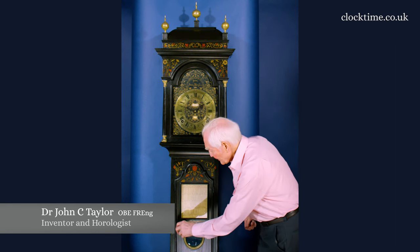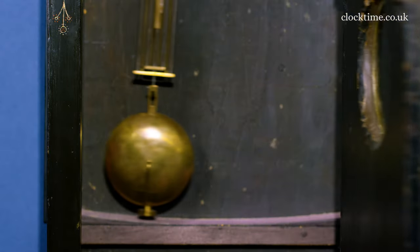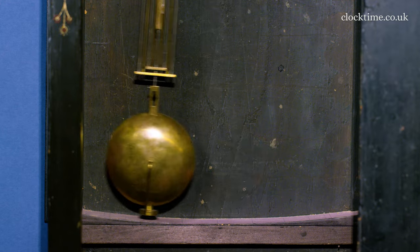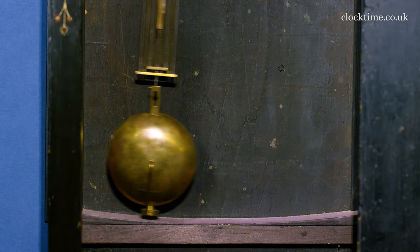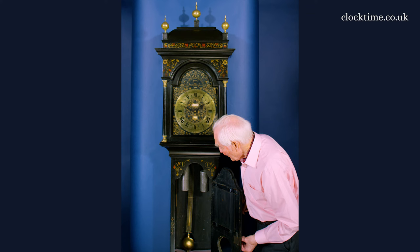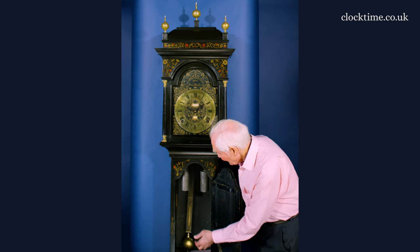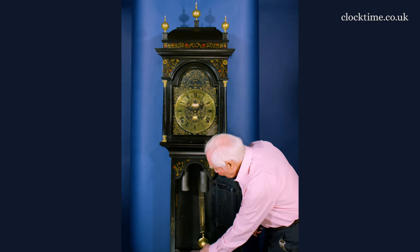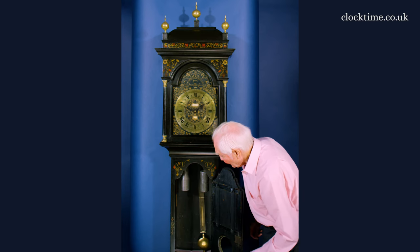I'll open the trunk and show you the temperature compensated pendulum. It's got on each side three steel rods which expand down and two brass rods which expand up, and this means that the rods themselves move up and down but the pendulum bob keeps the same level.